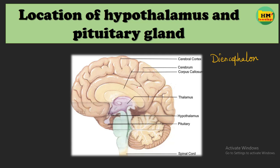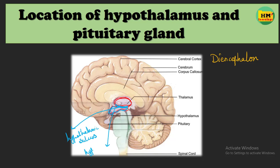Now I will show you the location of the parts of the diencephalon. This violet colored part is basically the diencephalon. This part is called the thalamus. Now below the thalamus, there is a sulcus which is called the hypothalamic sulcus. This sulcus separates the thalamus from the hypothalamus. So the hypothalamus is this portion located below the hypothalamic sulcus in the diencephalon. Now you know about the location of the hypothalamus.